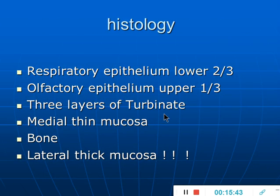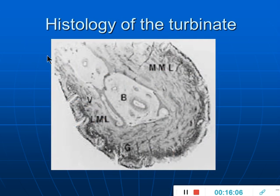Regarding histology, we have respiratory epithelium in the lower two-thirds and olfactory epithelium in the upper third of the nasal cavity. The turbinate has three layers: the mucous membrane is very thick laterally, while it is thin medially, with bone inside the turbinate. This thick lateral mucous membrane is relevant to the question of inferior turbinate hypertrophy, for controlling the temperature and humidity of the inspired air.